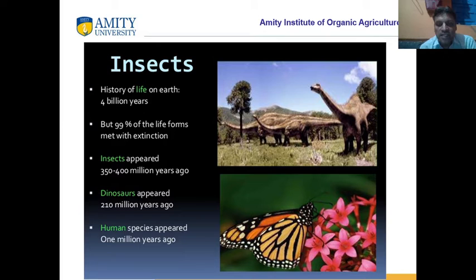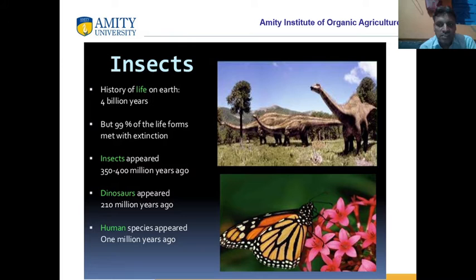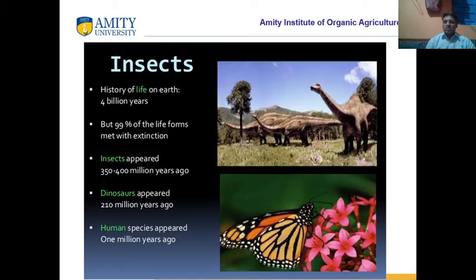So insects are older — historical and older insects — because they appeared 400 million years ago. Dinosaurs appeared 210 million years ago, and human beings just only 1 million years ago. Great difference in origin. Human beings came at a very later stage. The oldest was the origin of life, then insects 400 million years ago, then dinosaurs 210 million years ago, and human beings just arrived only 1 million years ago.